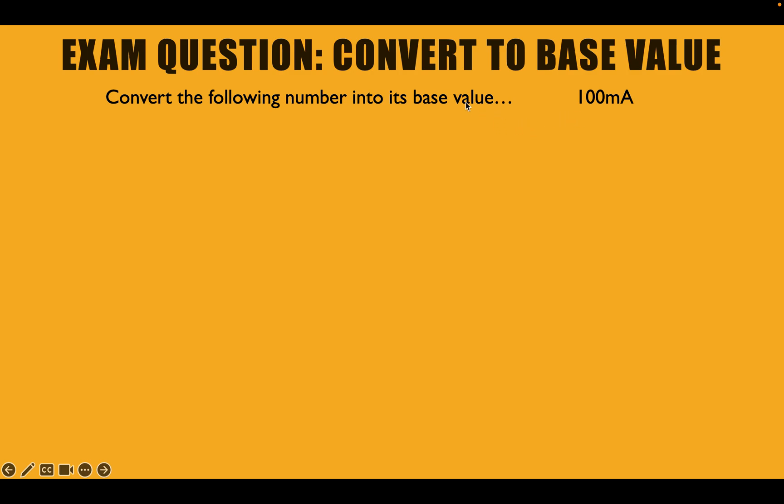So why do we convert numbers to base value first of all? We convert numbers to base value because we need numbers in their base value in order to do our calculations. So we cannot use such things as, what are we looking at here? We're looking at 100 milliamps. We can't use milliamps in our calculation. We can only use the base value, which in this case, for this particular question, is amps. So amps is the base value of this.